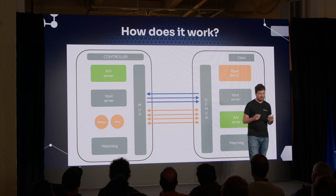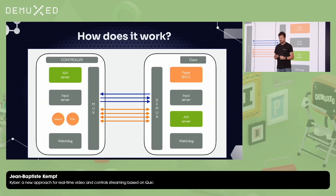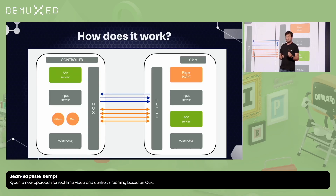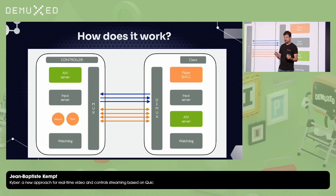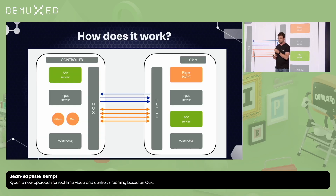How does it work? We have an audio-video server which is basically grabbing either the desktop, or a frame buffer, or HDMI, and encoding that in real time. And then we have an input server which is doing more or less the same. All of that is sent to a muxing application which takes all that and sends it to a network. And on the other side, we have exactly the same.